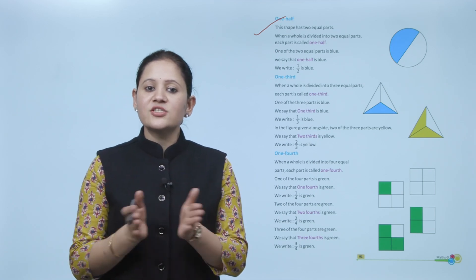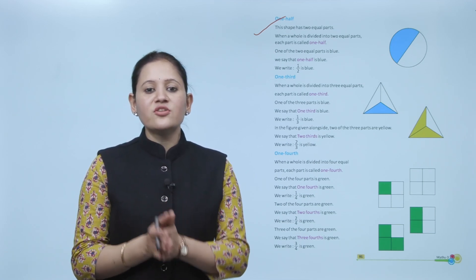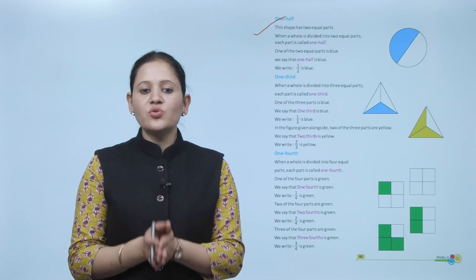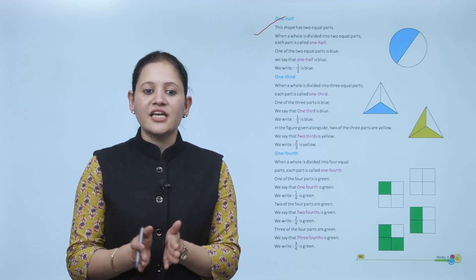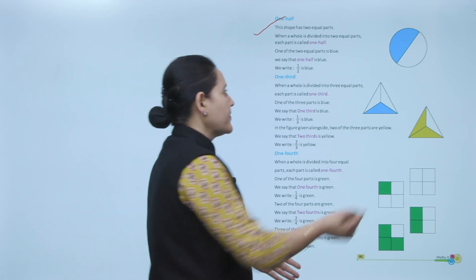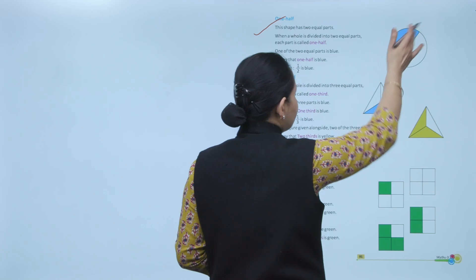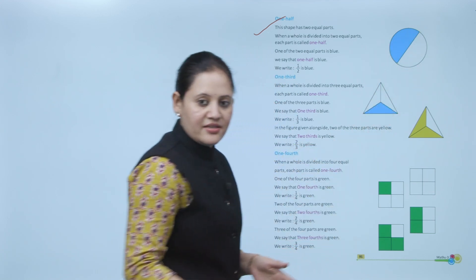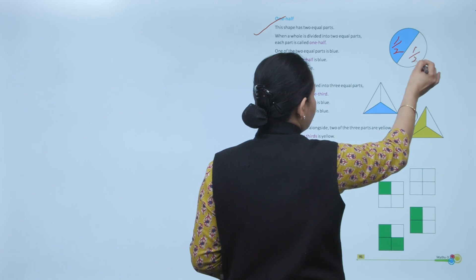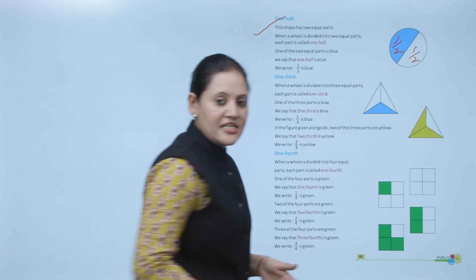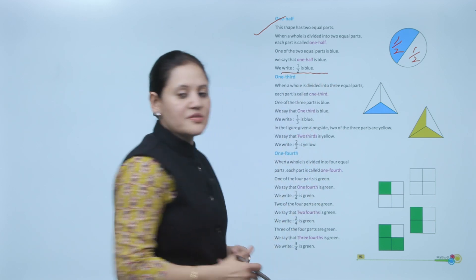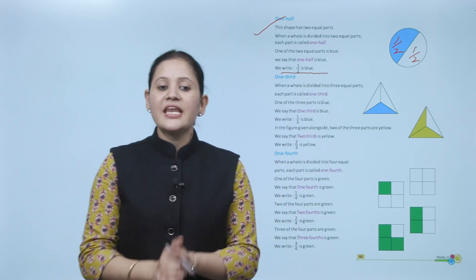One half: this shape has two equal parts. When a whole is divided into two equal parts, each part is called one half. One of the two equal parts is blue — we say that one half is blue, and we write it as 1 by 2. Here, one circle is divided into two equal parts, so each part represents 1 by 2. One part is shaded, so its fraction is 1 by 2.